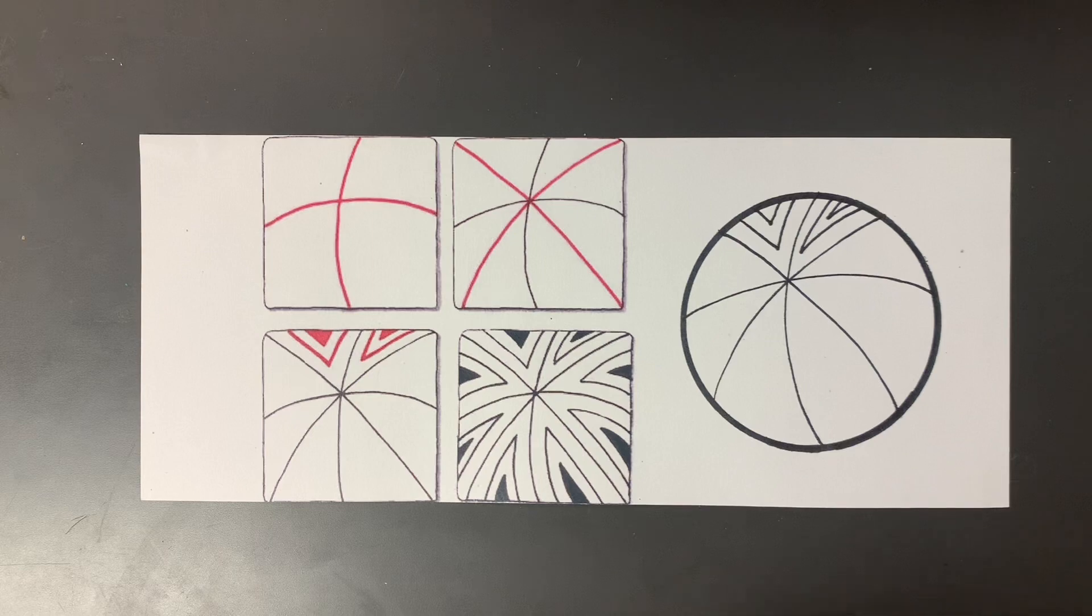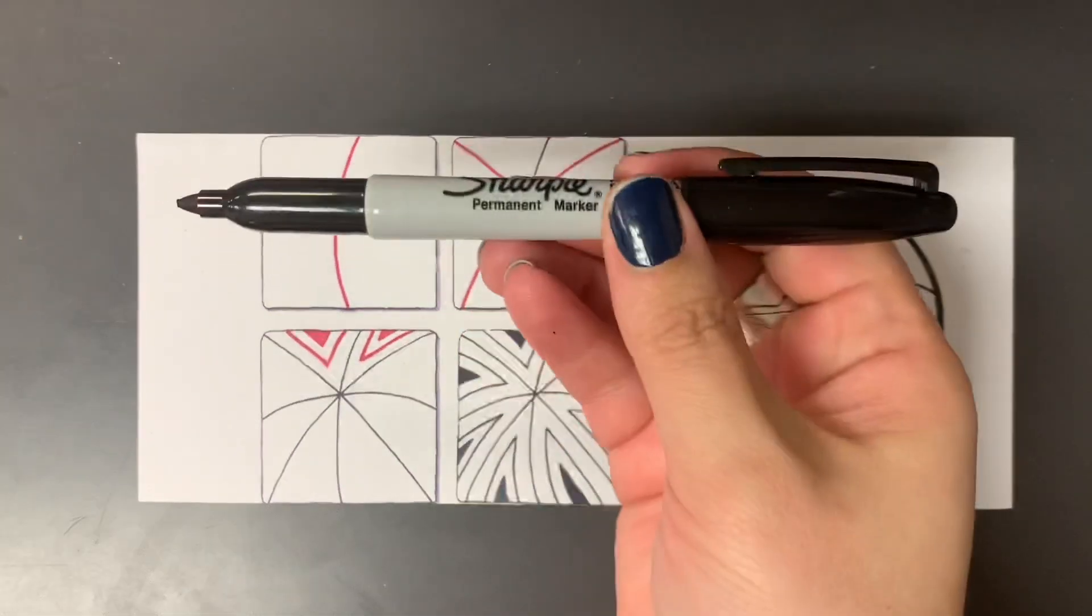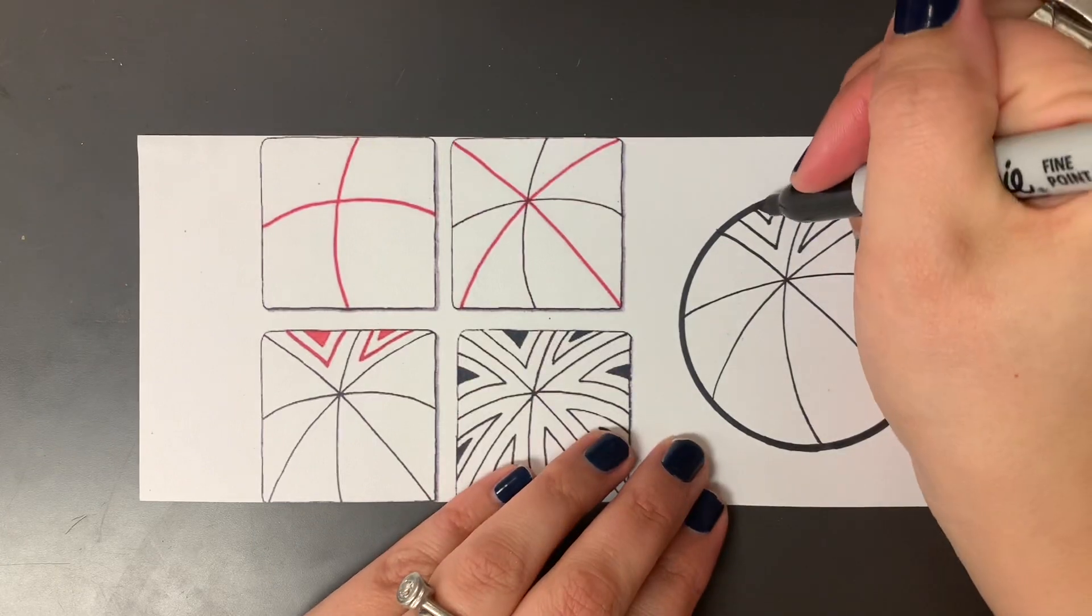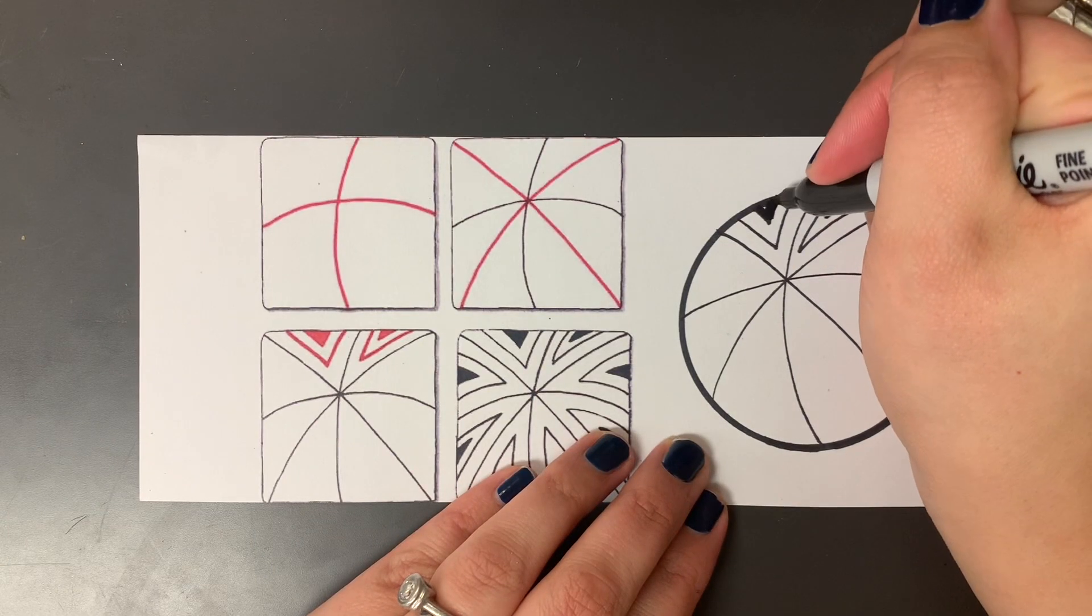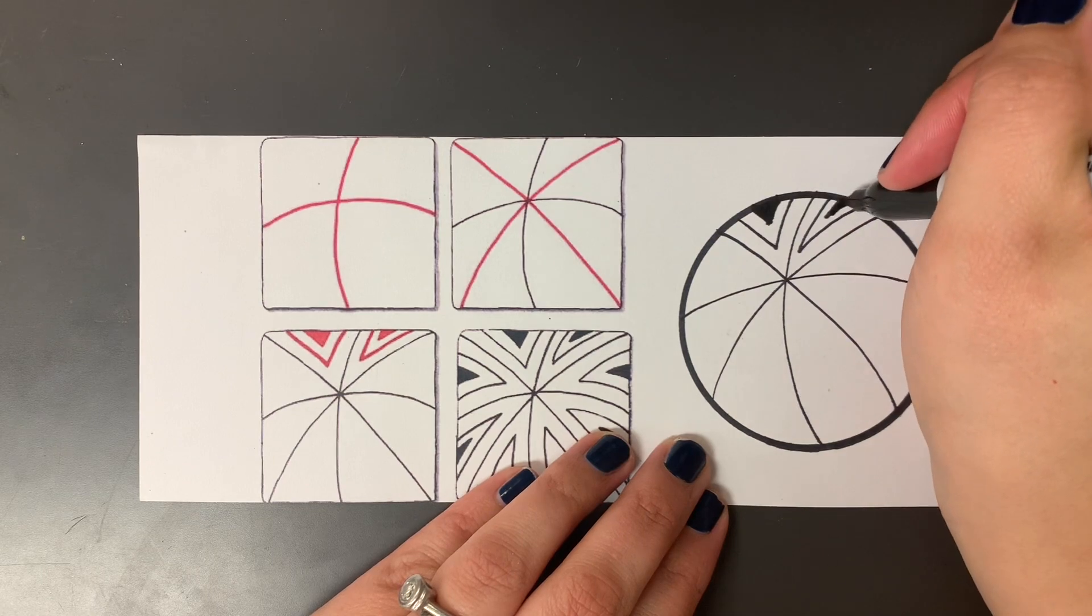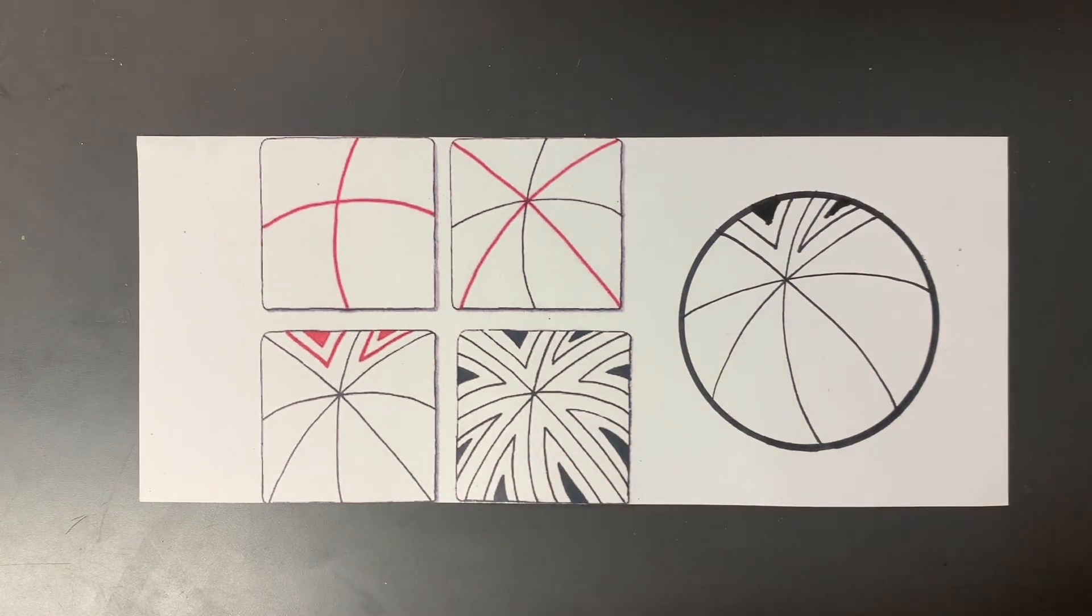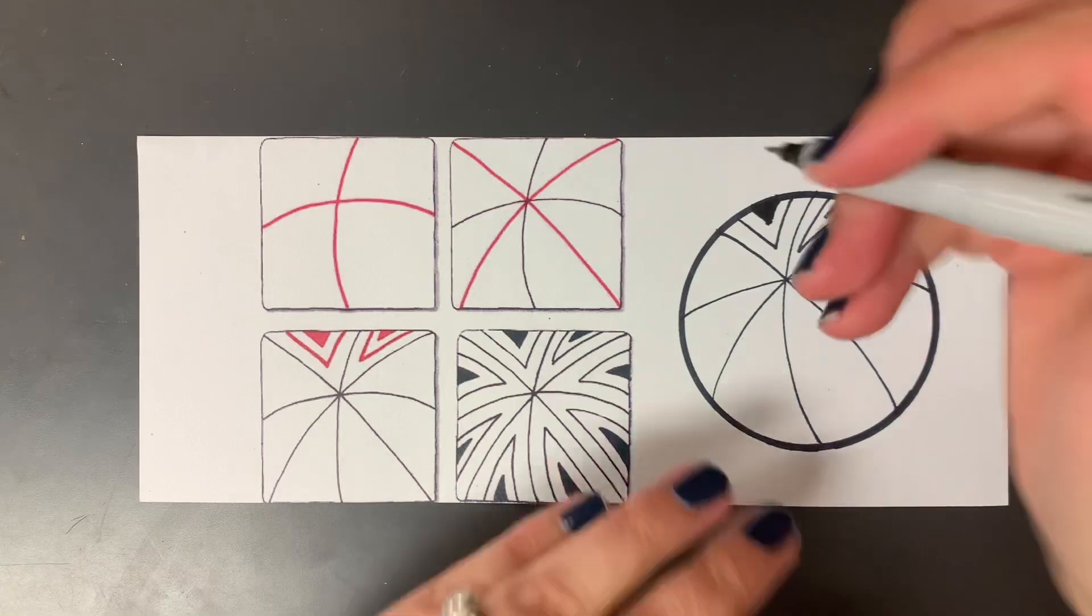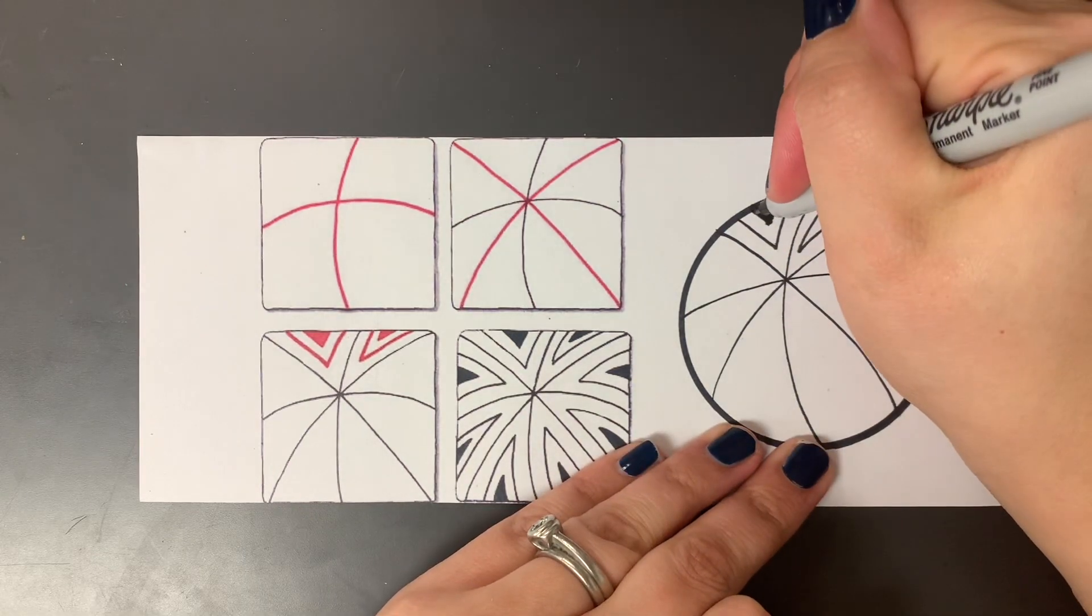Okay and then like I said any big spaces to color in you can use your Sharpie marker versus the Sharpie pen. Okay looking at that it's a little bit bumpy so I'm going to go with my Sharpie pen and just touch up my line.